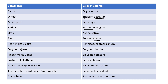Pearl millet, also called bajra, has the scientific name Pennisetum americanum. Sorghum, also called jowar, has the scientific name Sorghum bicolor. Next is finger millet or ragi — the scientific name is Eleusine coracana.